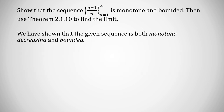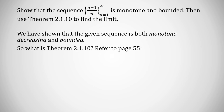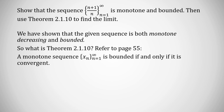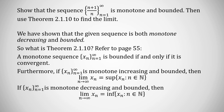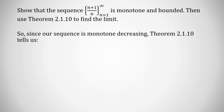We've shown the sequence is monotone decreasing and bounded. Applying Theorem 2.1.10 on page 55: a monotone sequence is bounded if and only if it is convergent. Since our monotone sequence is bounded, it is convergent. Furthermore, since the sequence is monotone decreasing and bounded, the limit equals the infimum of the set of values the sequence takes.